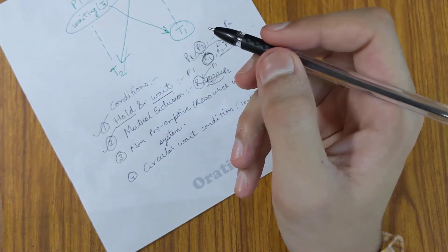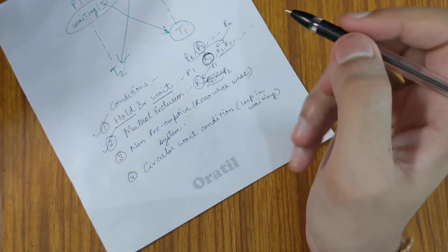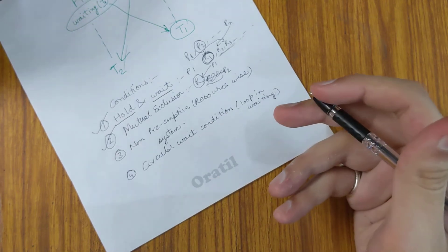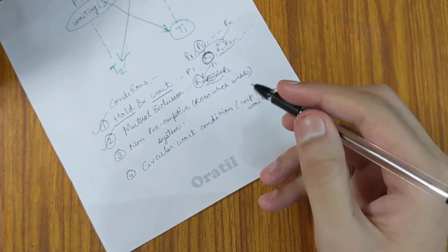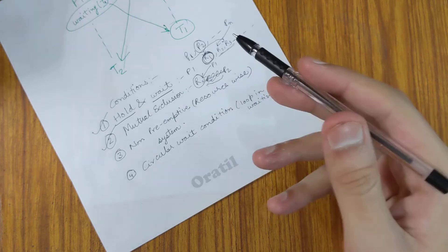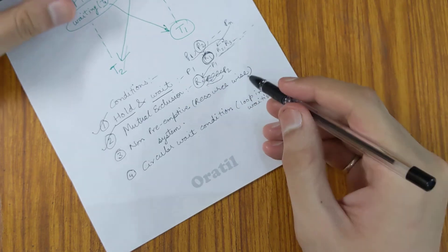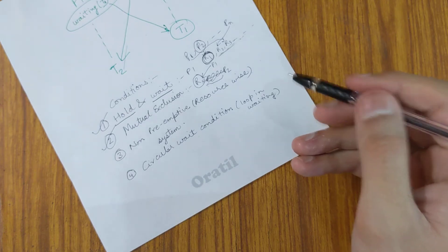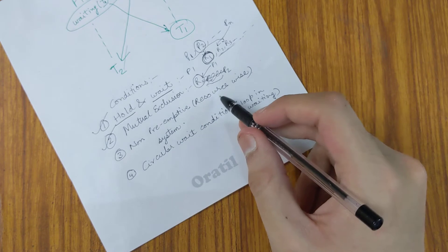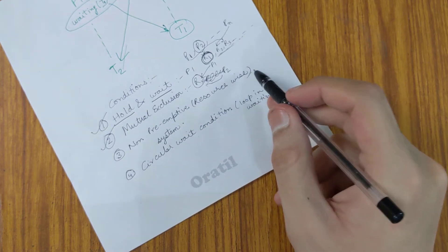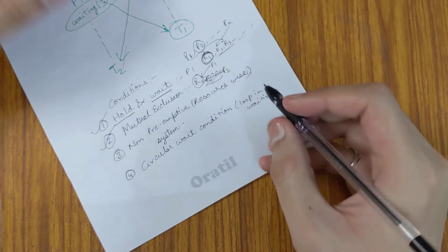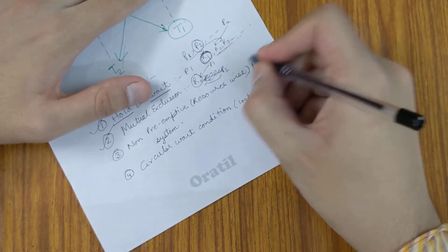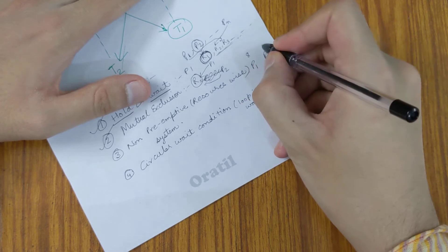The third condition is non-preemptive system. This can mean two things - first is process-wise preemption, but here it's different. Here it is resource-wise. For example, if process P1 has priority 8 and process P2 has priority 3, and P2 is holding resource R1 that P1 now requires...